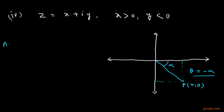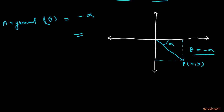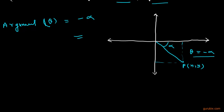Therefore, the argument θ = −α in this condition, where the real part is positive and the imaginary part is negative. This is how we can calculate the argument of a given complex number. Thank you.